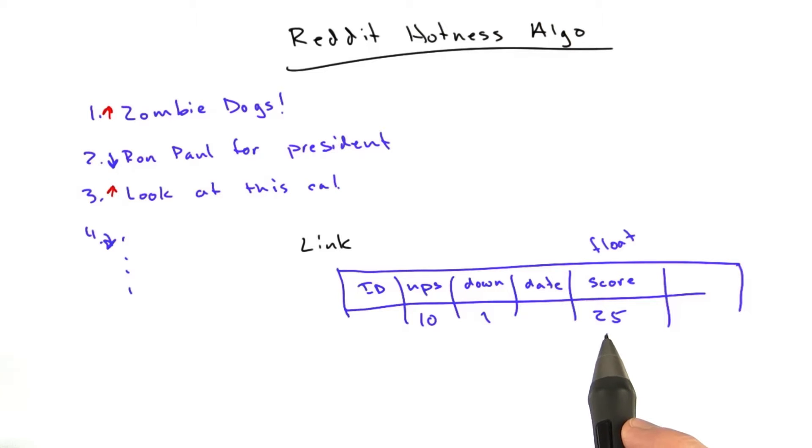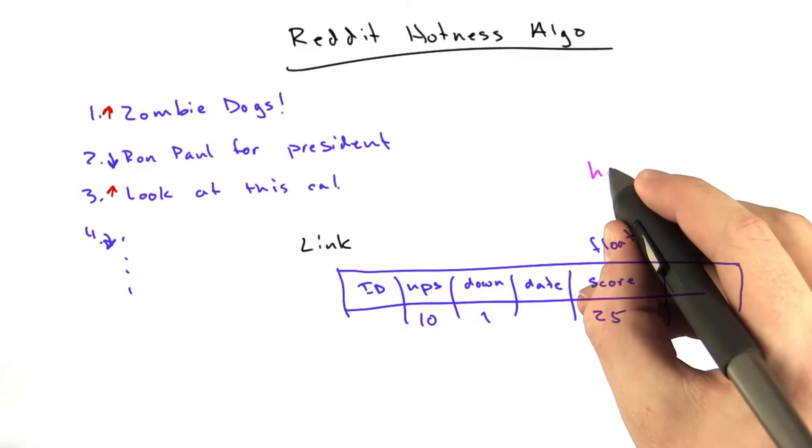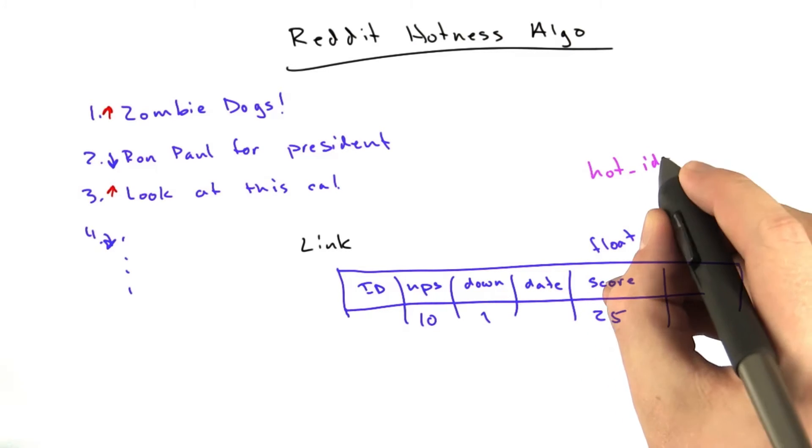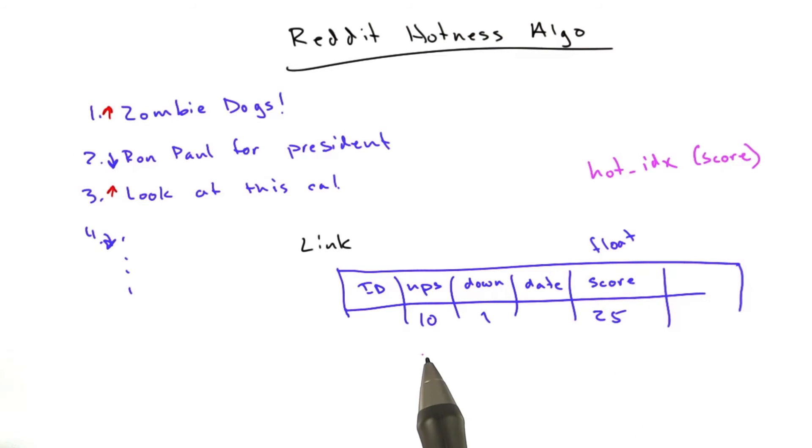And the way the Reddit hot algorithm works is there's an index on the score field. It used to just be called the hot index, and it was really just on the score field.